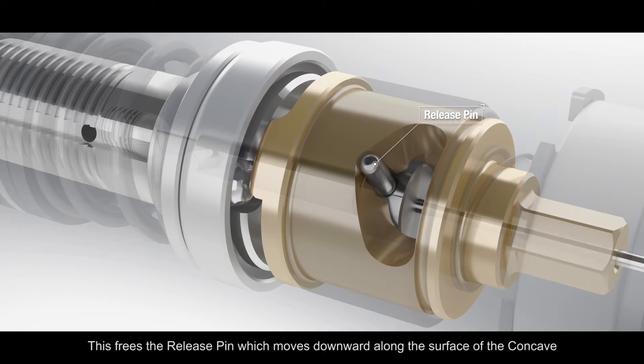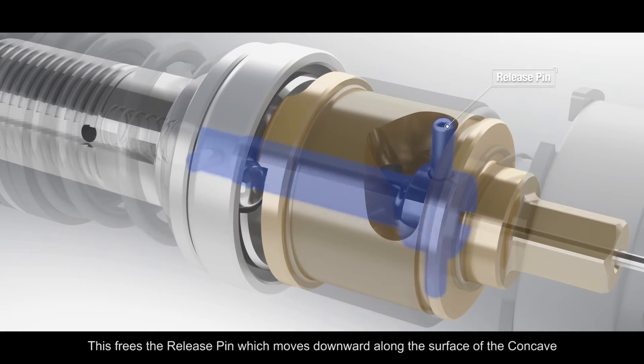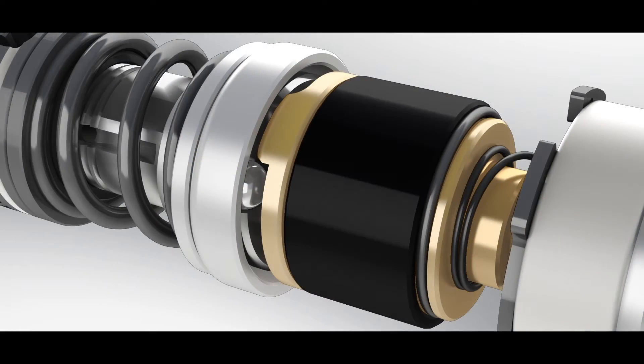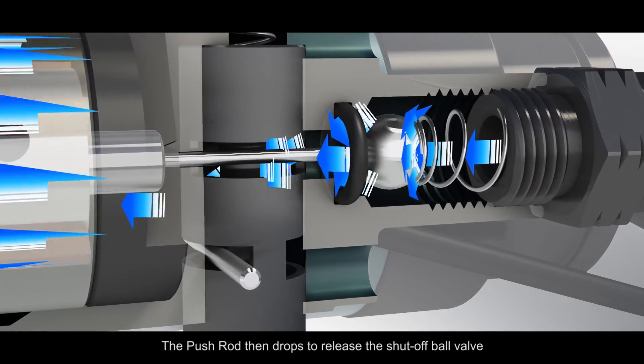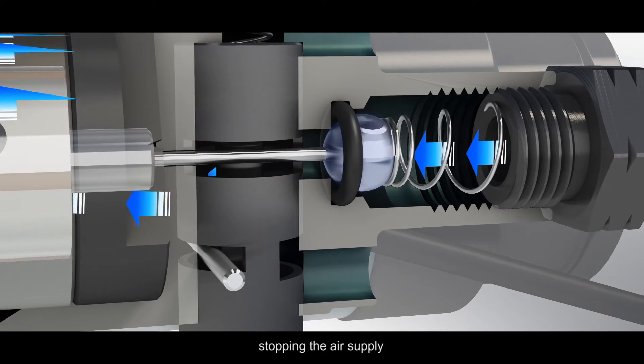This frees the release pin, which moves downward along the surface of the concave. The pushrod then drops to release the shutoff ball valve, stopping the air supply.